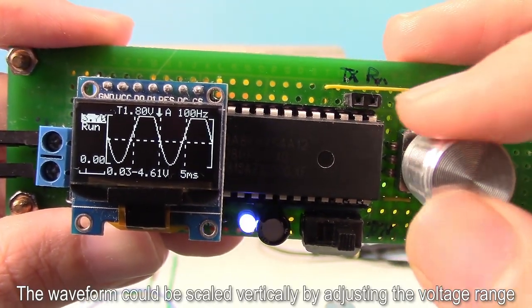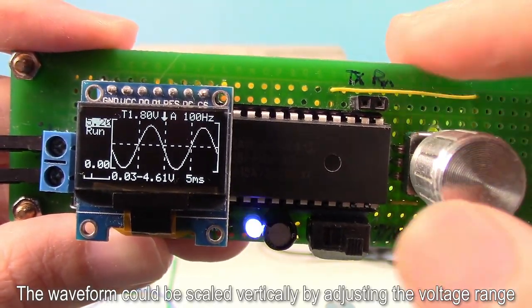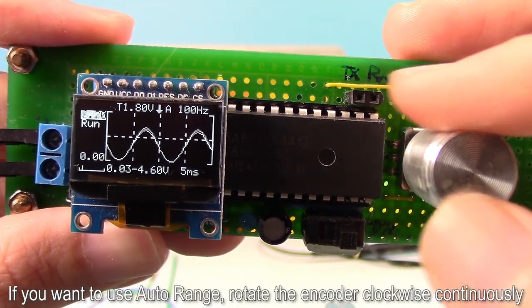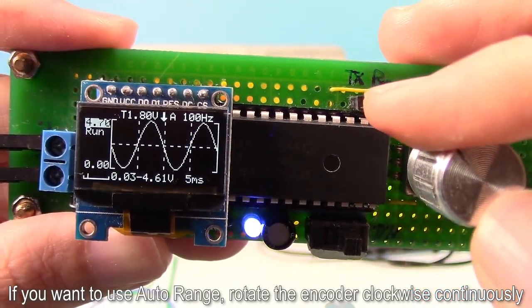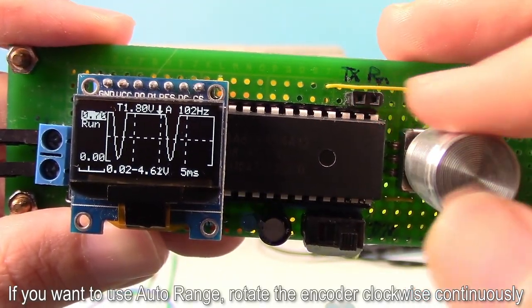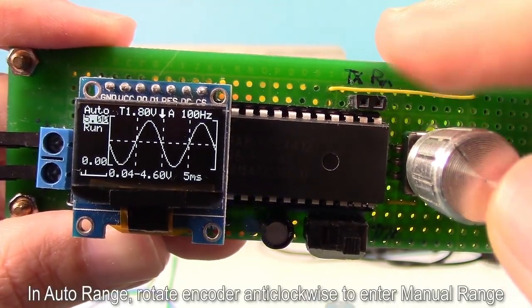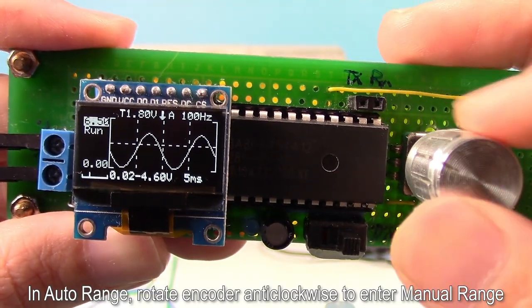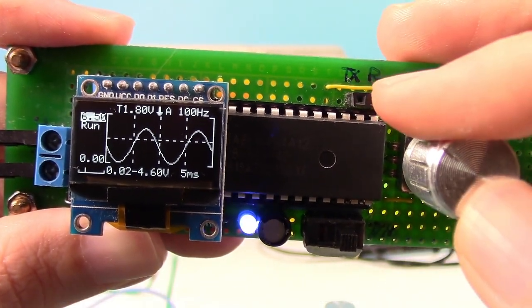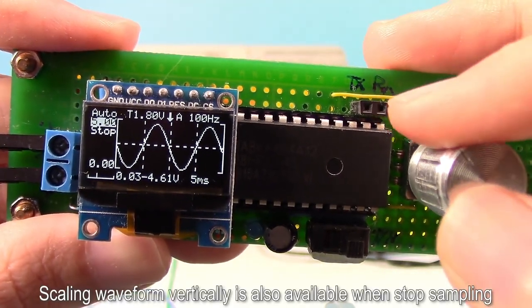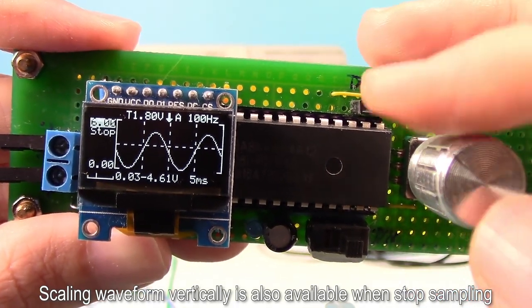The waveform could be scaled vertically by adjusting the voltage range. If you want to use auto range, rotate the encoder clockwise continuously. You will enter the auto range. In auto range, rotate the encoder anticlockwise to enter manual range. Scaling waveform vertically is also available when stop sampling.